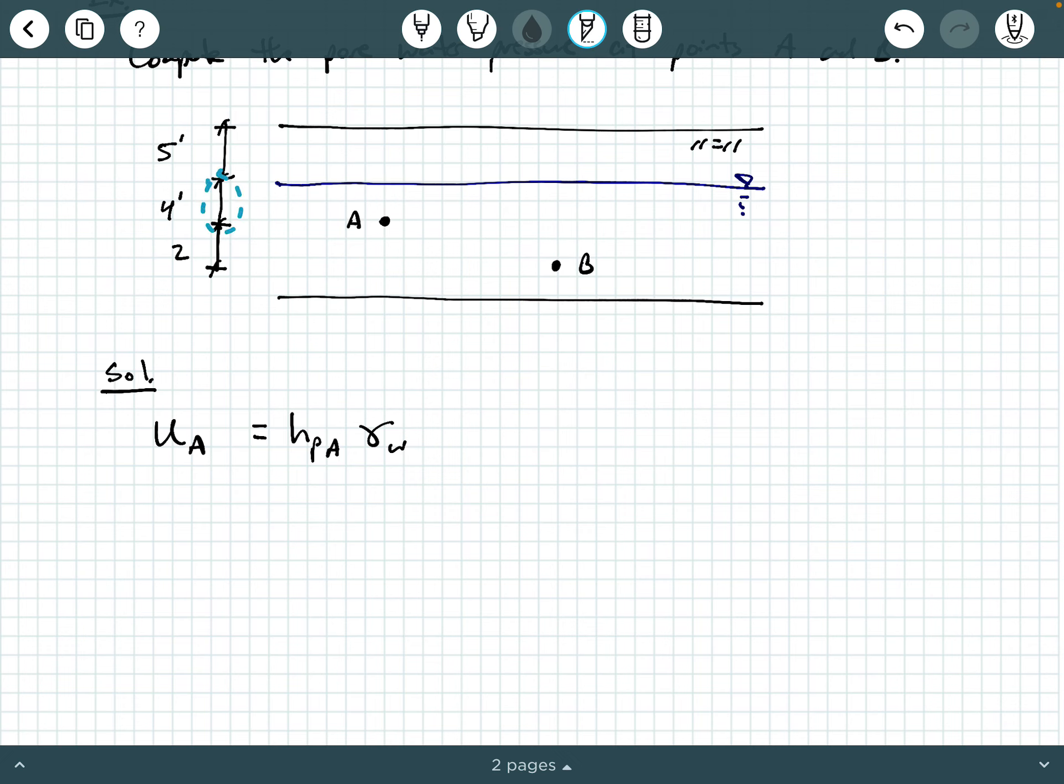So what's the height of water above point A? Well, it's just this 4 feet. That's how much water is sitting above point A.